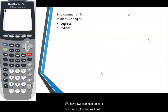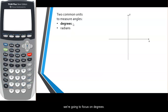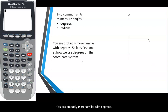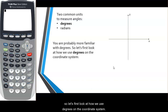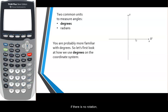We have two common units to measure angles: degrees and radians. First we're going to focus on degrees, since you are probably more familiar with them. Let's look at how we use degrees on the coordinate system. On the initial side — the positive x-axis — if there is no rotation, then we would say that is an angle of zero degrees.